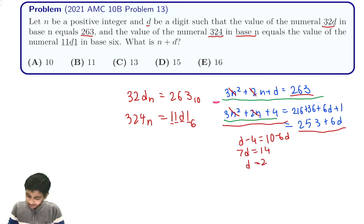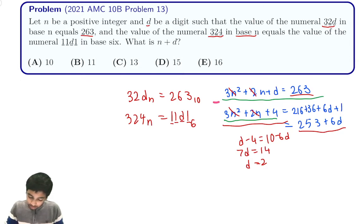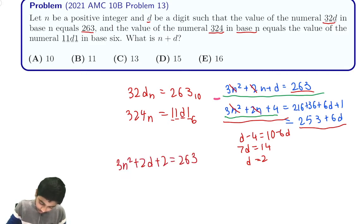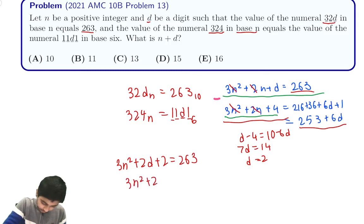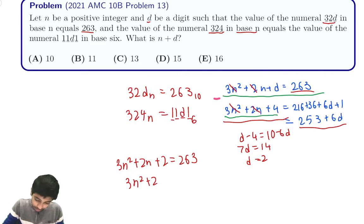We can substitute d equals 2 back into any one of our equations. So we get that 3n squared plus 2n plus 2 equals 263, or 3n squared plus 2n minus 261 equals 0.